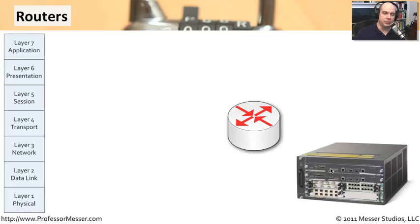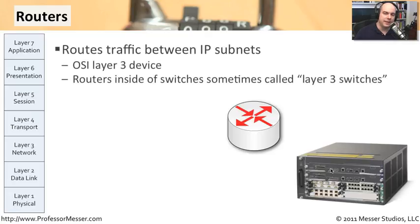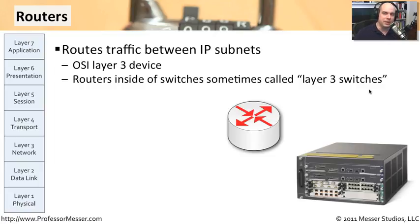Since switches operate at layer two, everybody is on the same subnet. To separate our network into other pieces, we need something at a higher level — OSI layer three — and that would be a router. Routers are usually in the center of the network, connecting all the different switches to each other and perhaps connecting an internet connection as well. Any time you need to connect two different IP subnets, you need a routing function somewhere. This may be a standalone device, or a software or hardware module within a switch — you'll sometimes hear the term a layer three switch. That's really a router embedded inside a switch. You're not really switching at layer three; you're routing at layer three.